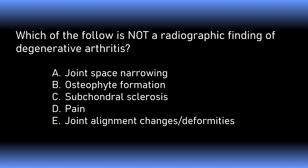Which of the following is not a radiographic finding of degenerative arthritis — is it joint space narrowing, osteophyte formation, subchondral sclerosis, pain, or joint alignment changes or deformities? The incorrect answer is pain. While it is a symptom of degenerative arthritis, it is not a radiographic finding.